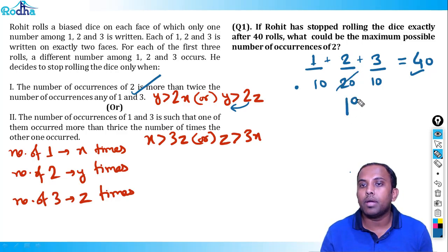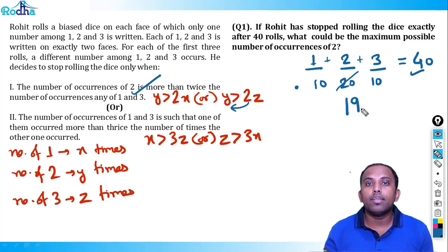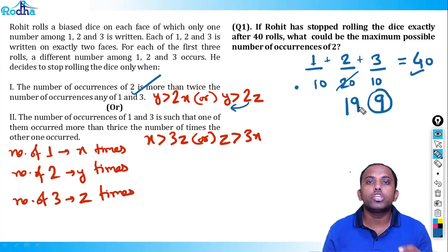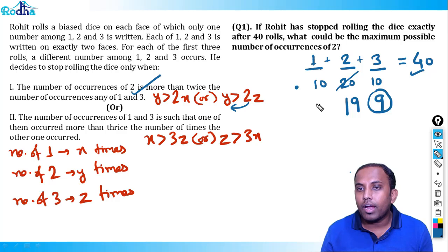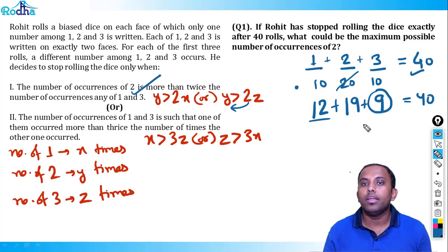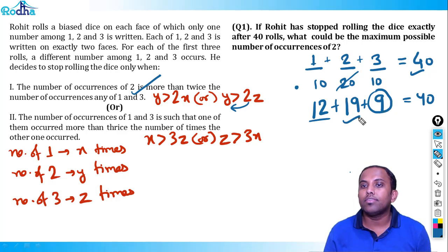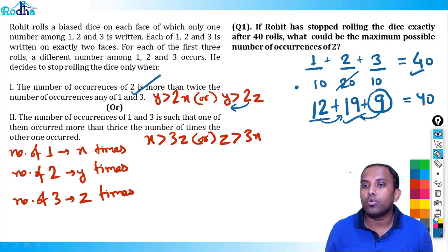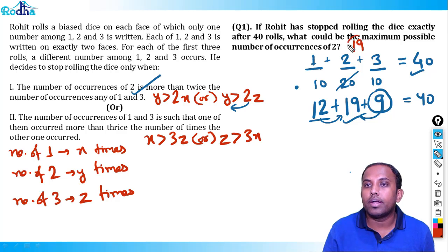Can x = 4 be the minimum? With x = 4, z can go up to 12 before condition 2 triggers at z = 13. If z = 13, it's more than triple of 4, dice stops. Number of 2 should not be more than double till then. If y = 8 (just under double of 4), then 4 + 8 + 13 = 25. Still not 30. So x = 4 is not the minimum either.